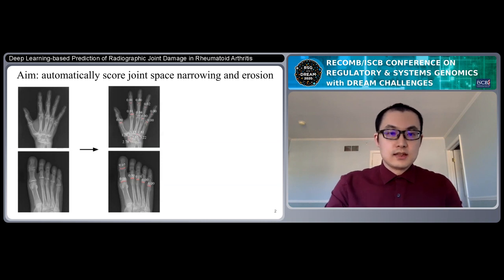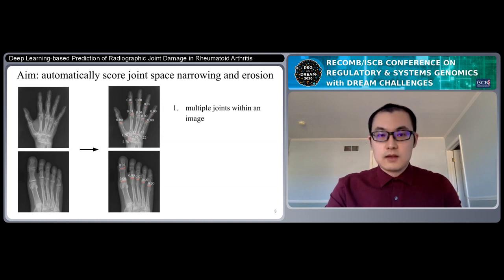In recent years, deep learning proved to be very powerful in computer vision-related tasks. But for this project, it's slightly different. There are three unique features. First, there are multiple joints within each image. So the model needs to not only identify all of these joints, but also distinguish the damaged joints from the healthy ones.